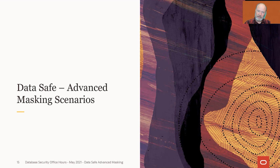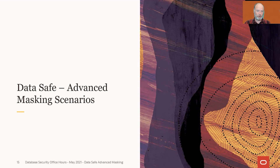We're going to look at three different scenarios today — these are beyond just simple masking. If you've been attending office hours, you've probably seen me demonstrate data masking before, where I'd create a sensitive data discovery job, find all the sensitive data, run a masking job, click mask the data, and accept the defaults. Today, instead of accepting the defaults, we're going to change some of them. I'll explain why as we go through each of the three different use cases.